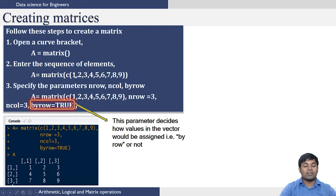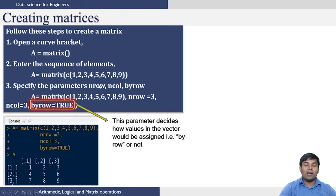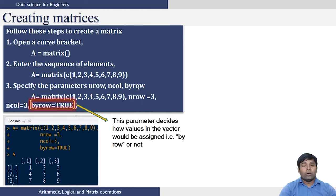Now let us see how to create matrices in R. To create a matrix in R you need to use the function called matrix. The arguments to this matrix function are the set of elements that need to be the elements of the matrix, how many rows you want, how many columns you want, and importantly the byrow parameter. Usually R arranges the elements you have entered in a column-wise fashion. If you want the elements to be entered row-wise, you have to set byrow as TRUE. The default option for byrow is FALSE.